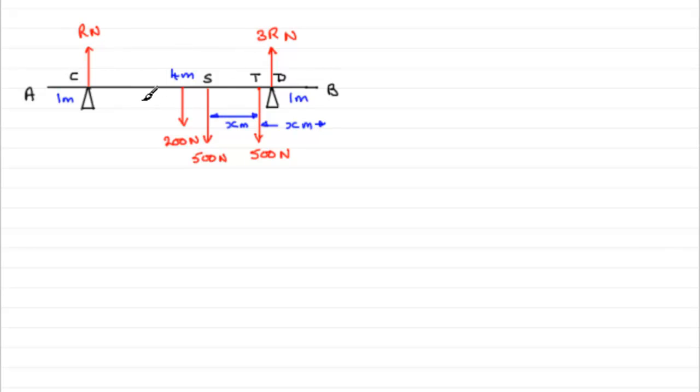So I'm going to get r by considering resolving vertically. Doesn't matter whether I go up or down, I'm going to go up though, purely because the r would then be in the positive sense. Now because this beam is in equilibrium there will be no resultant force up or down. So we can say that r plus 3r minus the 200 minus this 500 and this 500 gives us the resultant force acting in the vertical sense on this beam AB. And we know that that resultant force is zero.